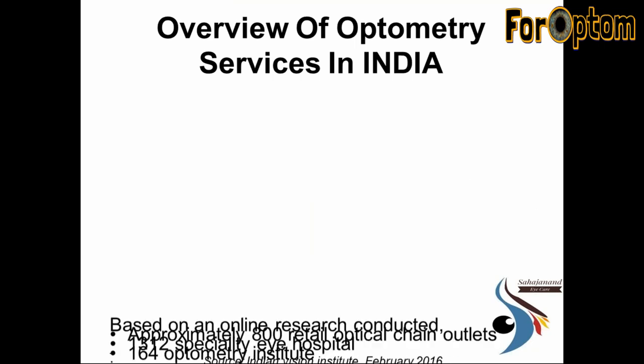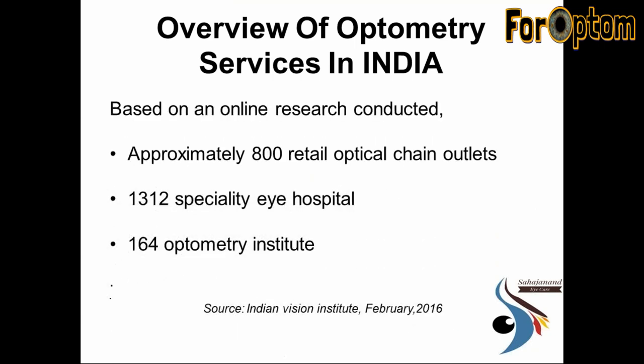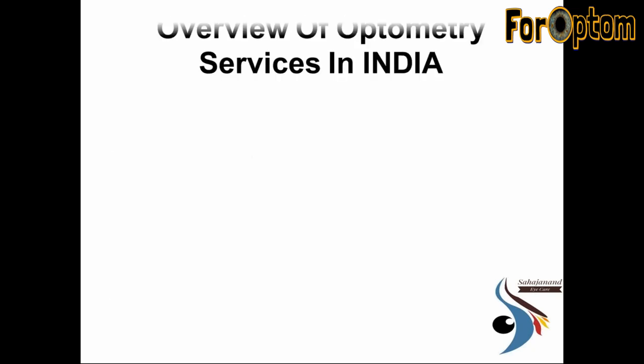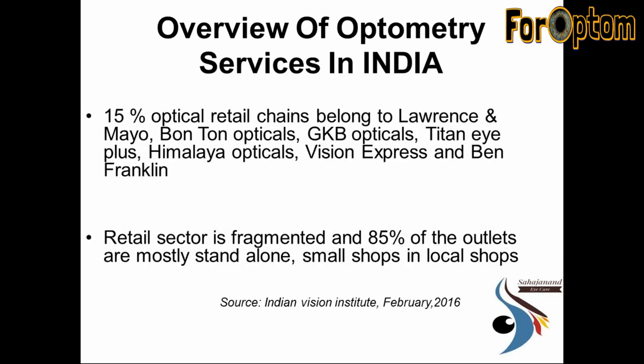Now I will present the scenario of optometry in India. Based on an online survey conducted over one month by IVI, there are approximately 800 retail optical chain outlets, 1,312 specialty eye hospitals, and 164 optometry institutes. The optical segment is divided into two parts: 15% belongs to big box stores like Lawrence and Mayo, Titan, and GKB, while 85% of outlets are mostly standalone and small local shops.